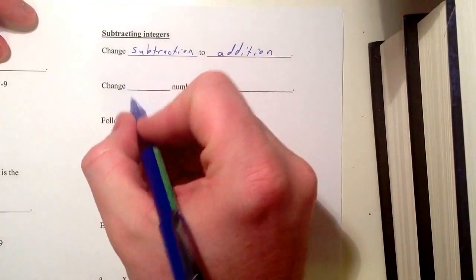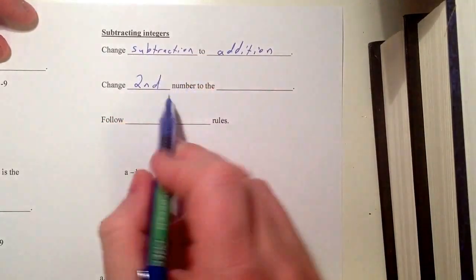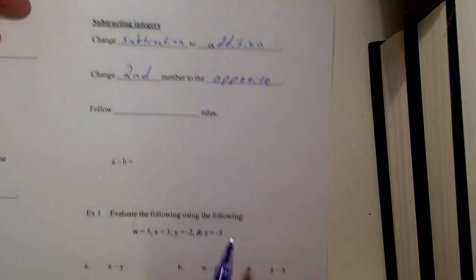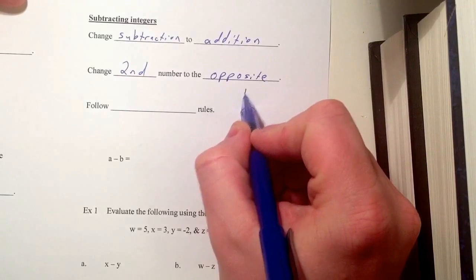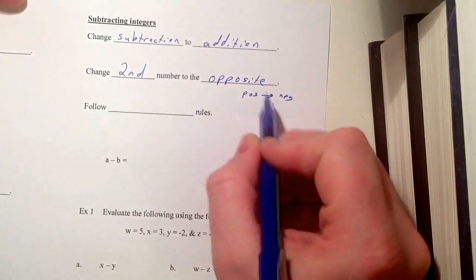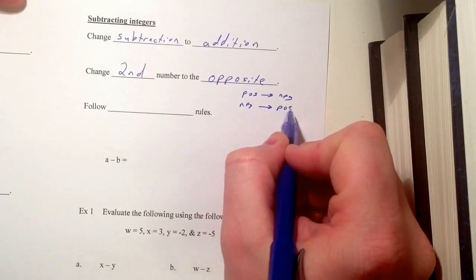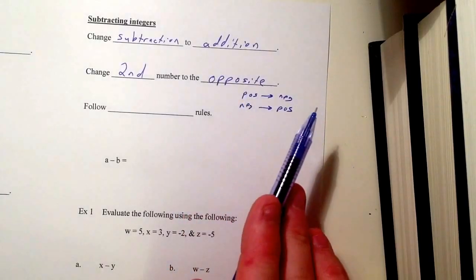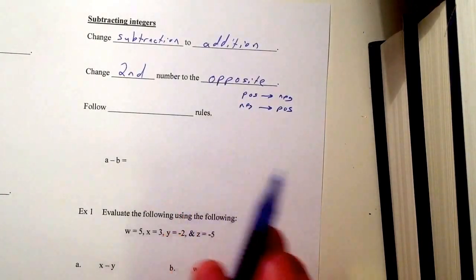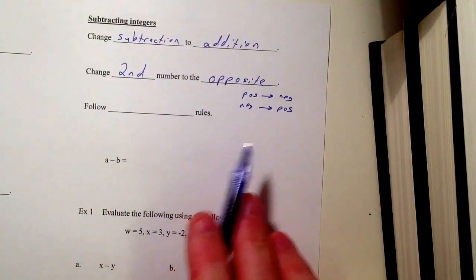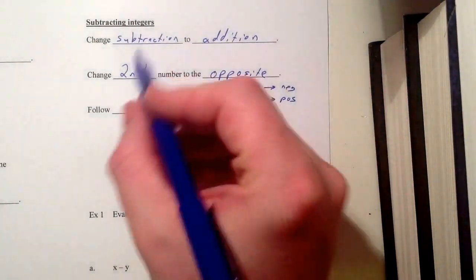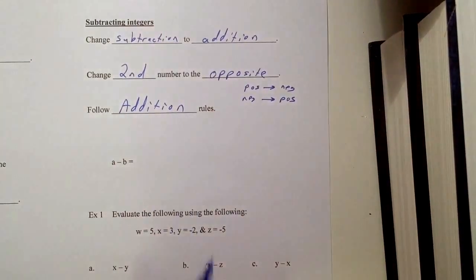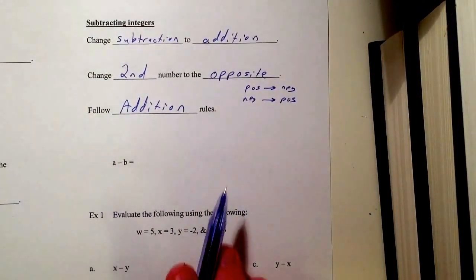When we change subtraction to addition, we're going to change the second number to its opposite. The opposite just means: if it's positive, it switches to negative, and if it's negative, it switches to positive. So a positive 3 becomes a negative 3, and a negative 4 becomes a positive 4. After that, we just follow the addition rules — no other additional rules needed.